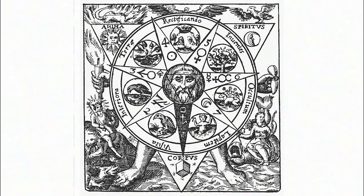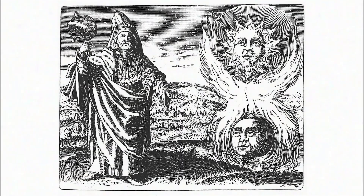Computer vision researchers don't really understand how a computer sees either. It's like alchemy and chemistry — the alchemy came first and then chemistry came. Right now we're in the alchemy stage of computer vision, where it works but we're not sure why. And it's the chemistry stage that I look forward to.